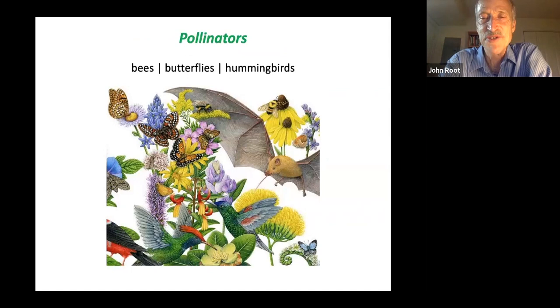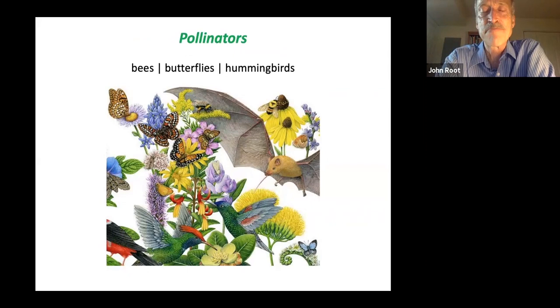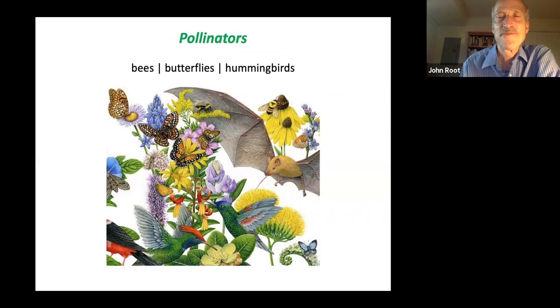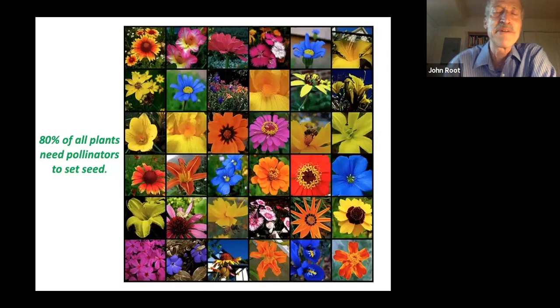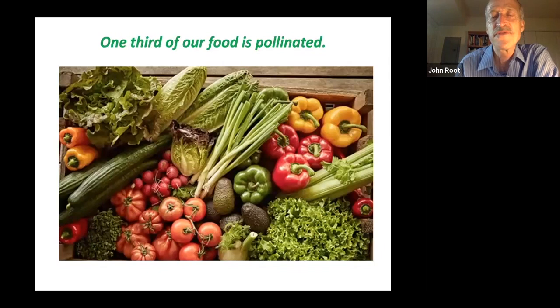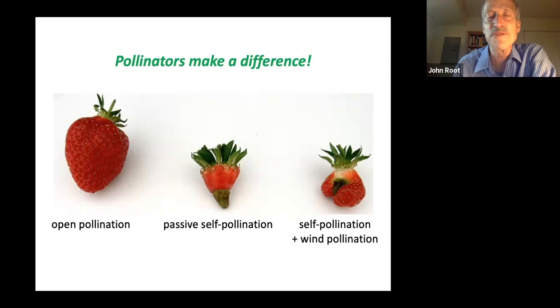Here's a beautiful poster of pollinators, but it's not entirely relevant to New England because bats are not pollinators here — only in the southwestern part of our country do bats pollinate flowers. But we certainly have bees, butterflies, and hummingbirds — the charismatic pollinators — as well as moths, wasps, flies, and beetles, which play important roles in pollinating flowers. 80% of all plants need pollinators to set seed; the other 20% are wind pollinated. One third of our food is pollinated, so they're so important.